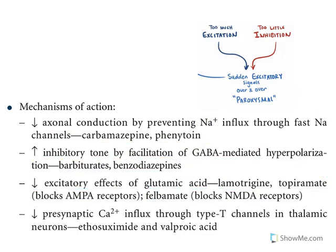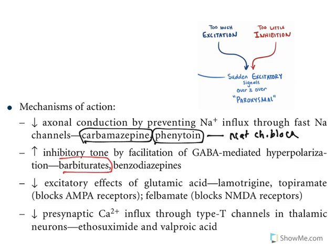Remember these important drug classes: sodium channel blockers in the brain — carbamazepine and phenytoin; inhibitory neurotransmitter enhancers — benzodiazepines and barbiturates; glutamate neurotransmitter blockers — lamotrigine, topiramate, and felbamate; and finally calcium channel blockers — ethosuximide and valproic acid.